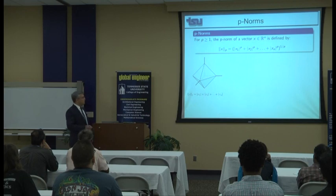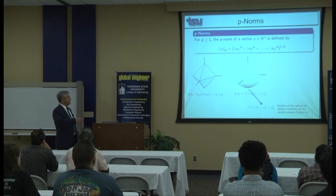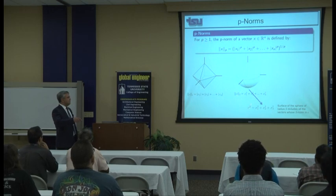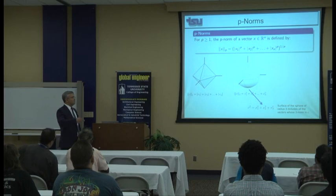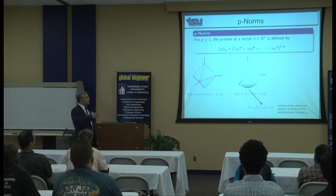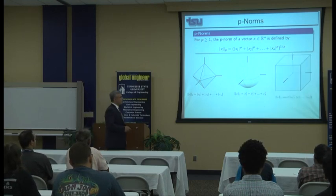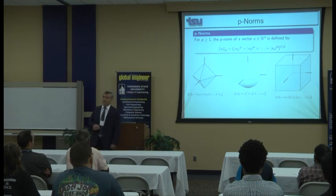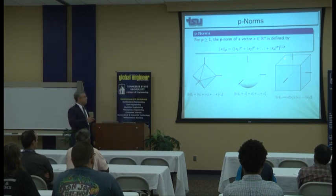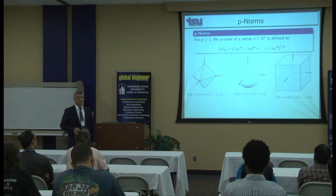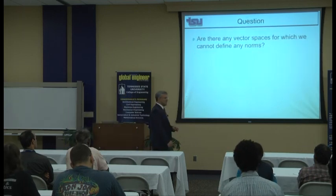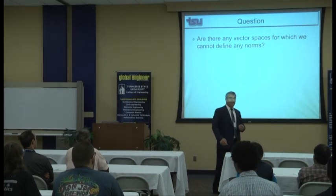The two-norm is a sphere: any point on the sphere has the same two-norm. We also have the infinity norm, defined as p goes to infinity. The question now: can we find a vector space that does not have a norm? For all finite-dimensional real or complex vector spaces, we are able to define a norm. But there are some infinite-dimensional topological vector spaces for which we may not find a norm that induces a topology. So yes, there are some vector spaces for which we may not define a norm.